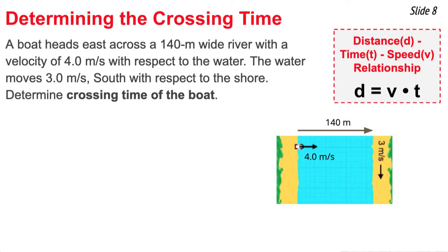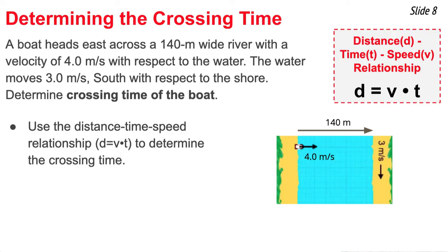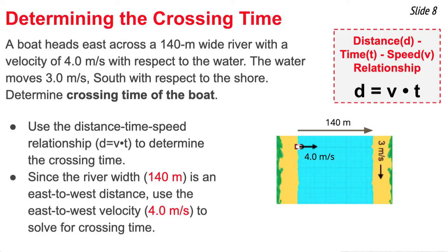The second question is to determine the crossing time of the boat — the time to travel 140 meters from the west side of the river to the east side. Using the formula d = v × t, the distance is 140 meters. To solve for time, I need to select the correct velocity. There are now three velocities: 4.0 meters per second east, 3.0 meters per second south, and 5.0 meters per second at an angle. Since I have an east-to-west distance, I use the eastward velocity. Setting t = d / v = 140 / 4.0 gives 35 seconds.